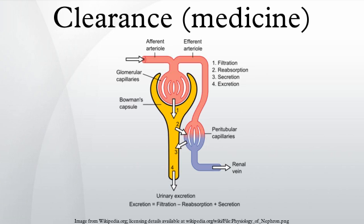Renal clearance can be measured with a timed collection of urine and analysis of its composition using the equation: K (clearance, mL/min) equals CU (urine concentration, mol/L) times Q (urine flow, mL/min) divided by CB (plasma concentration, mol/L). When the substance is creatinine, an endogenous chemical excreted only by filtration, the calculated clearance is equivalent to the glomerular filtration rate. Inulin clearance is also used to estimate glomerular filtration rate. This equation is valid only for the steady-state condition; if the substance is not at a constant plasma concentration, K must be obtained from the solution of the differential equation.